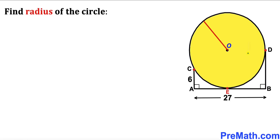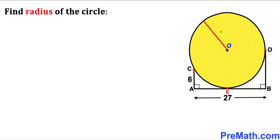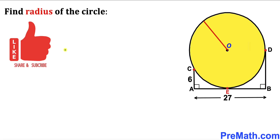Welcome to Pre-Math. In this video we have a yellow circle with center O. This circle is placed such that points E and D are the points of tangency. Furthermore, the length AB is 27 units and the length AC is 6 units. Our task is to calculate the radius of this yellow circle.